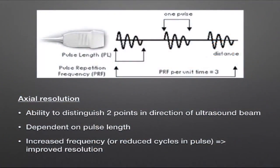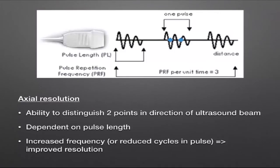An important parameter is axial resolution — our ability to distinguish two points that are close together in the axial plane, the direction the ultrasound is travelling in. The ability to distinguish two points separated in the axial plane is dependent on the pulse length. If these two points are closer together than the pulse length, the ultrasound machine will not be able to distinguish them as separate.